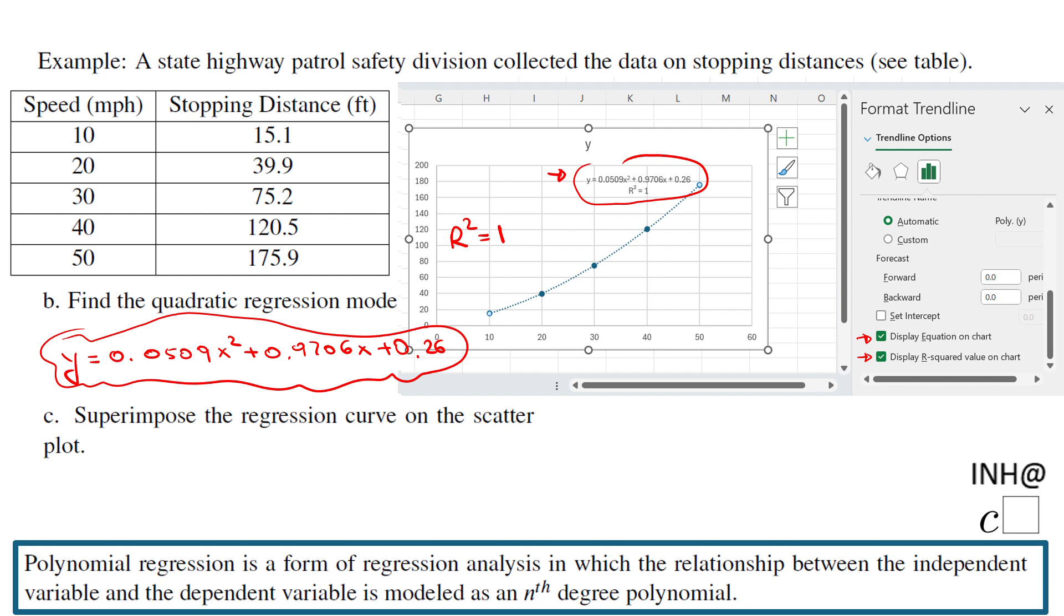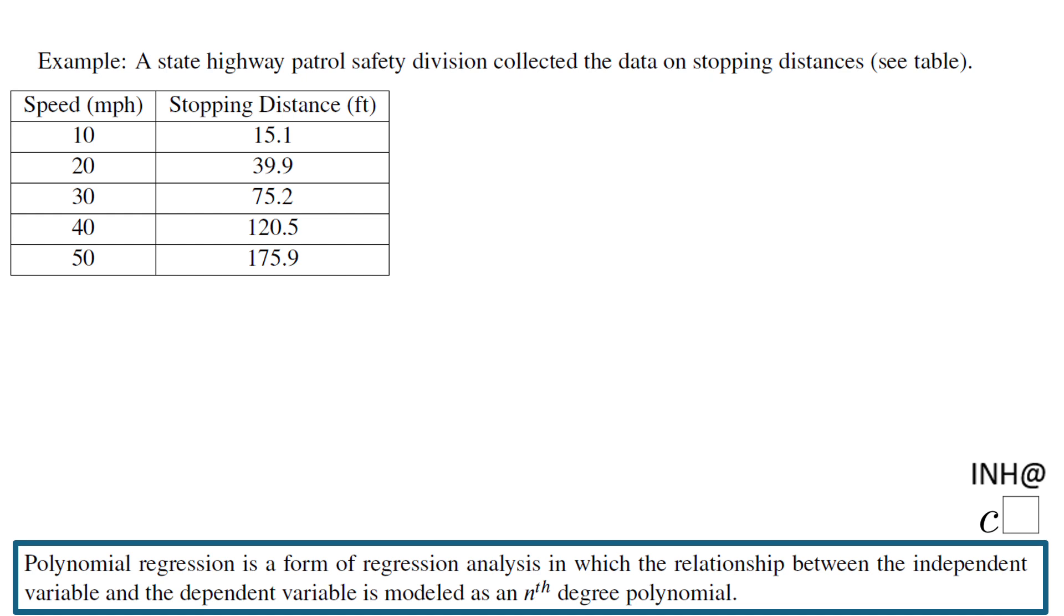On part c, we superimpose the regression curve on the scatterplot. We already did that at the beginning. And now we can move to part d where we're going to use the equation we just have, and we're going to predict the stopping distance for a vehicle traveling at 25 miles per hour.